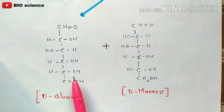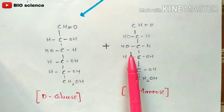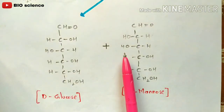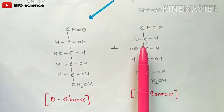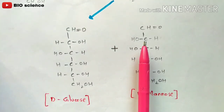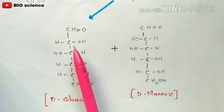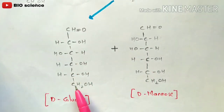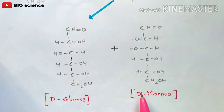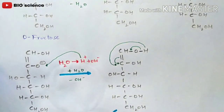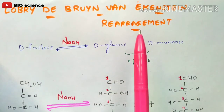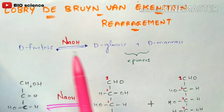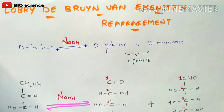From glucose we can obtain mannose through epimerization, as explained earlier. At the second carbon atom, the orientation of the functional group differs between glucose and mannose. If the OH group is towards the right side it is called D-glucose, and if the OH group is towards the left side it is called D-mannose. In this way, D-glucose and D-mannose are obtained from D-fructose. The main aim of the Lobry-de Bruyn-van Eckenstein reaction is that fructose gets converted to D-glucose and D-mannose.